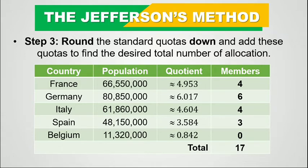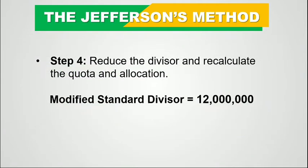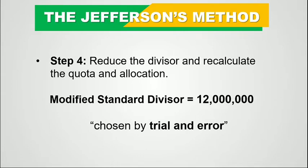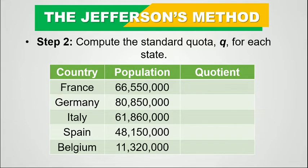Have we already achieved the desired total number of committee members to be apportioned? No, since we need to apportion 20 committee members. Since we have not obtained the desired total, let's proceed to step 4, which is to reduce the divisor and recalculate the quota and allocation. In this step, we will choose another divisor called the modified standard divisor. In this case, we will use 12 million. Remember that the modified standard divisor is chosen by trial and error — it does not have any formula. You just have to choose a divisor that will satisfy the desired number of people to be apportioned.